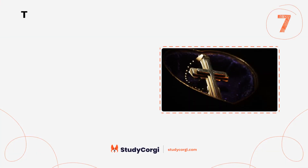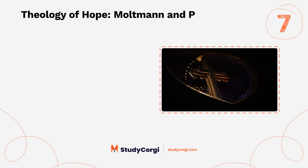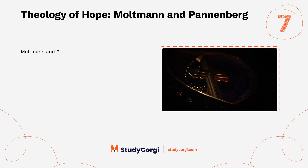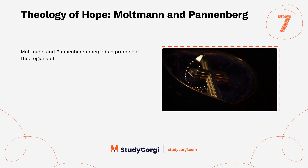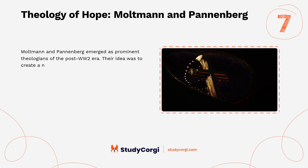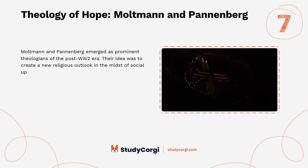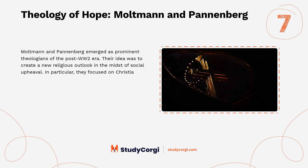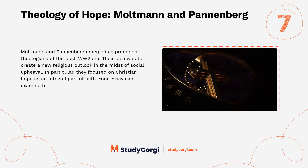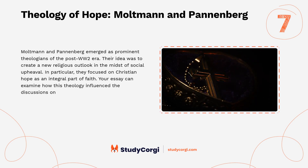Theology of hope: Moltmann and Pannenberg. Moltmann and Pannenberg emerged as prominent theologians of the post-WW2 era. Their idea was to create a new religious outlook in the midst of social upheaval. In particular, they focused on Christian hope as an integral part of faith. Your essay can examine how this theology influenced discussions on social justice.